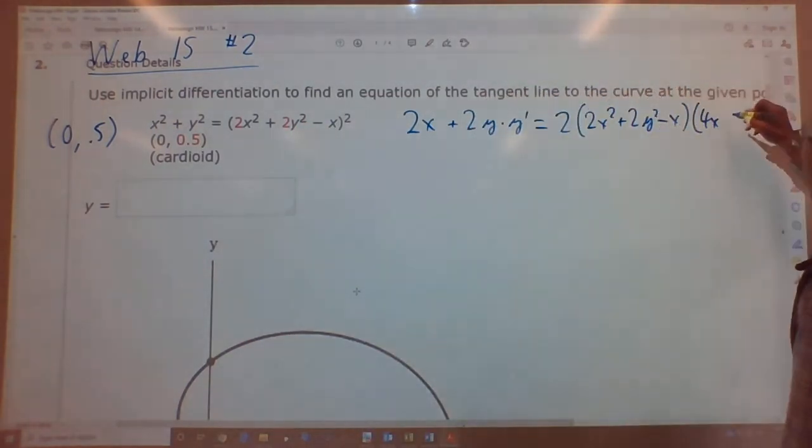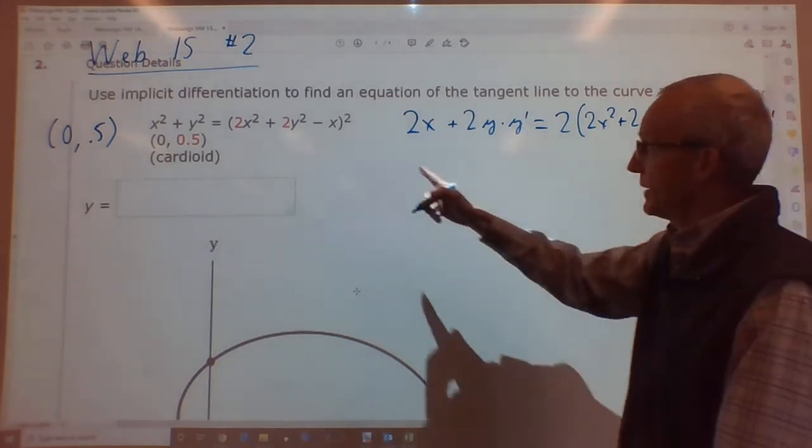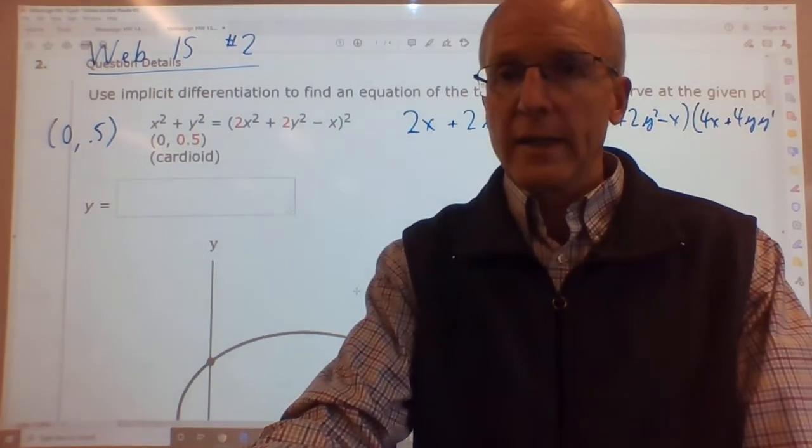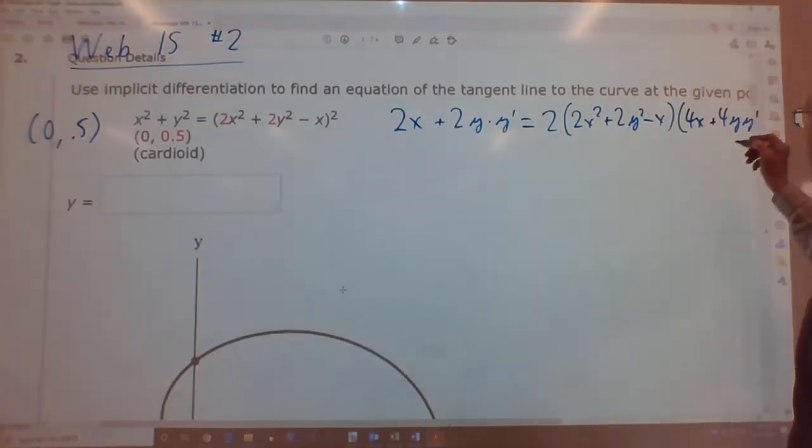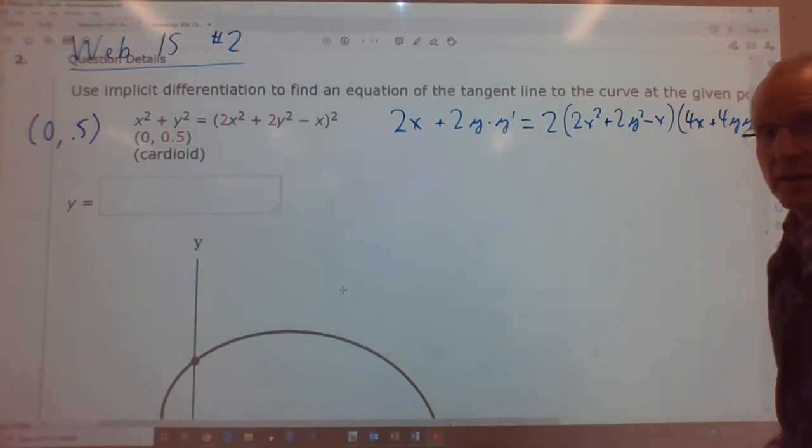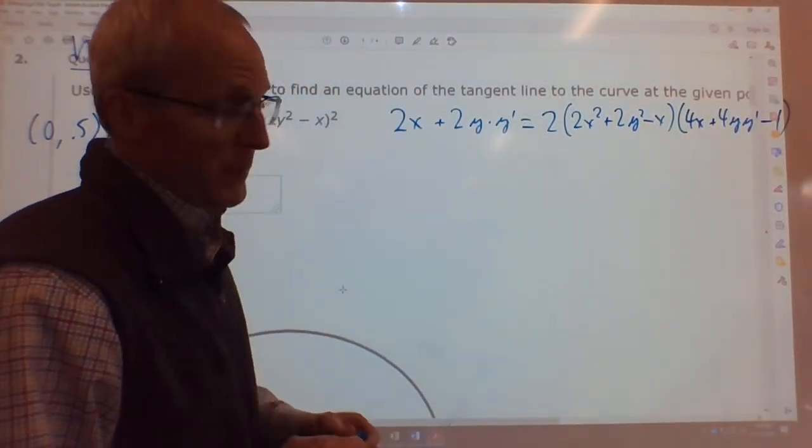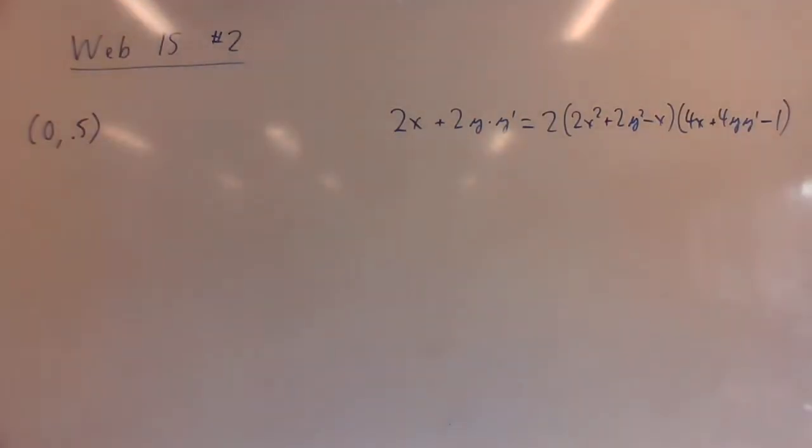So 4x, the derivative of 2y² is 4y times y', so plus 4y·y', and the derivative of x is 1, so that's just minus 1. Now here is the trick.